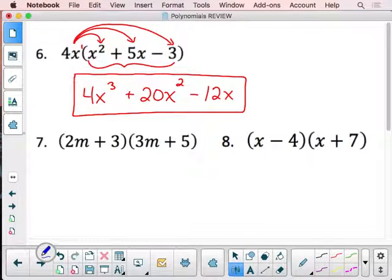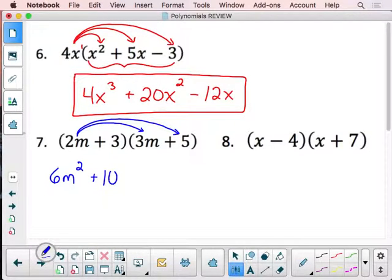Now we move on to number 7. We're going to double distribute. That means we take the 2m and it gets multiplied by the 3m and the 5. So we multiply 2m times 3m. We get that 6m squared. Don't forget it's squared because we add those exponents. Plus 10m.